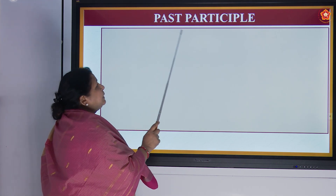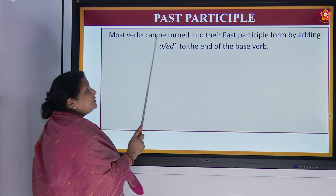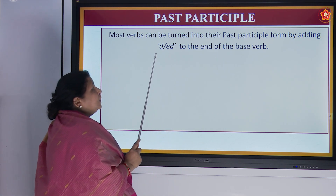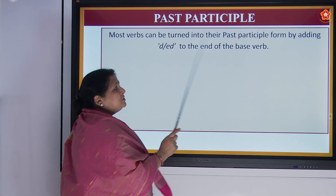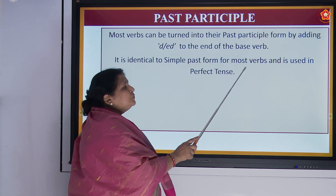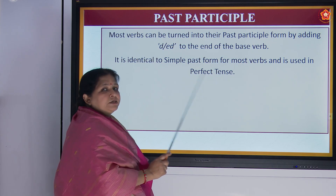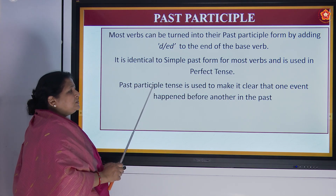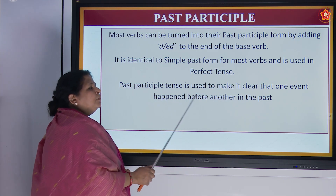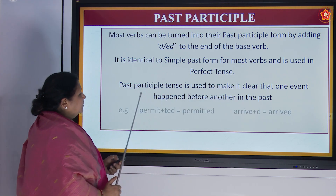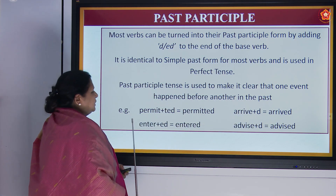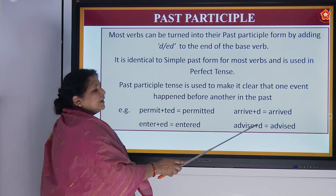Now let us learn what is past participle. Most verbs can be turned into their past participle form by adding 'd' or 'ed' to the end of the base verb. It is identical to the simple past form for most verbs and is used in perfect tenses. Past participle is used to make it clear that one event happened before another in the past. Examples: permit → permitted, arrive → arrived, enter → entered, advise → advised.